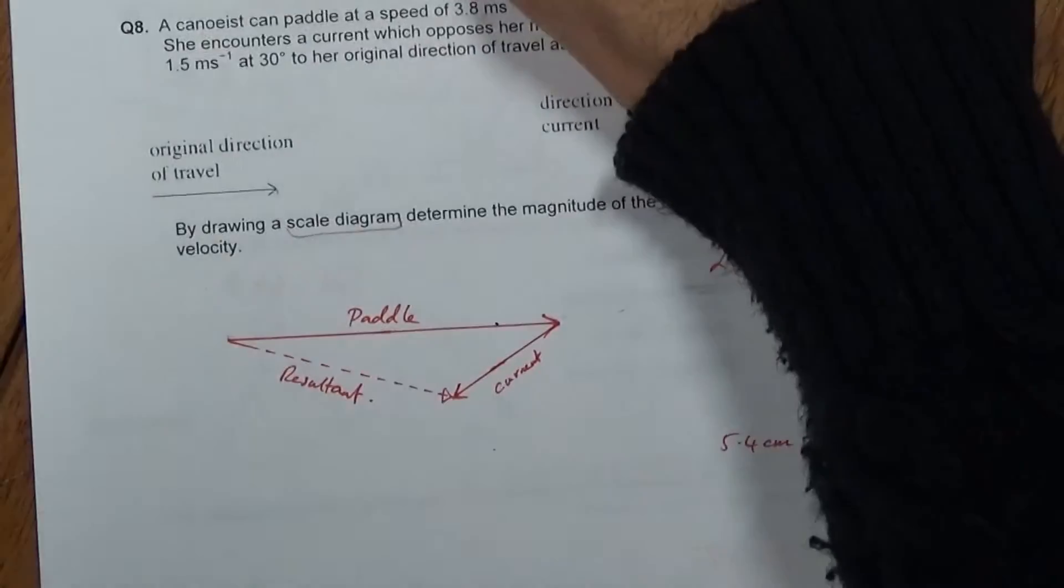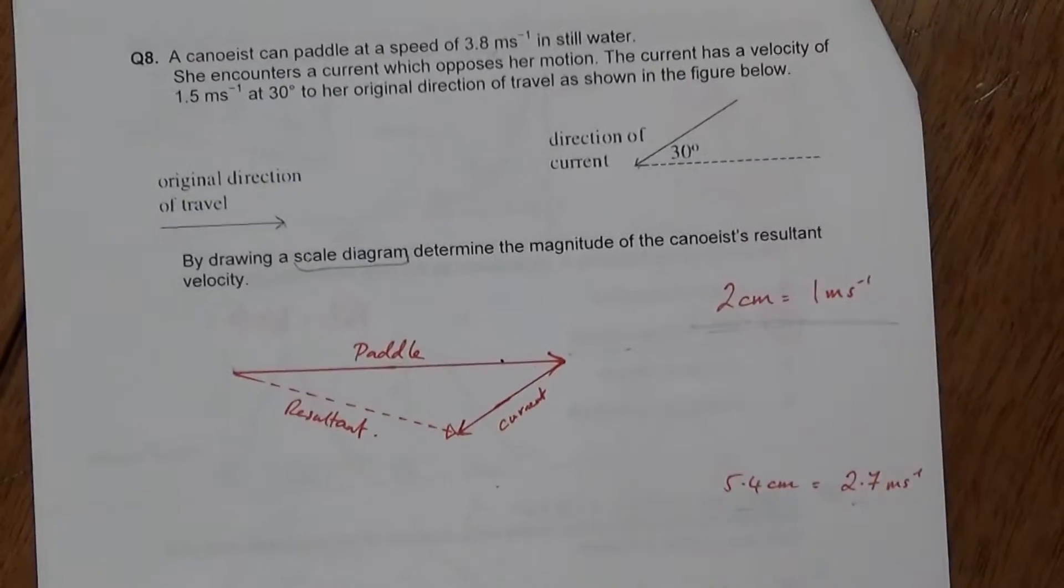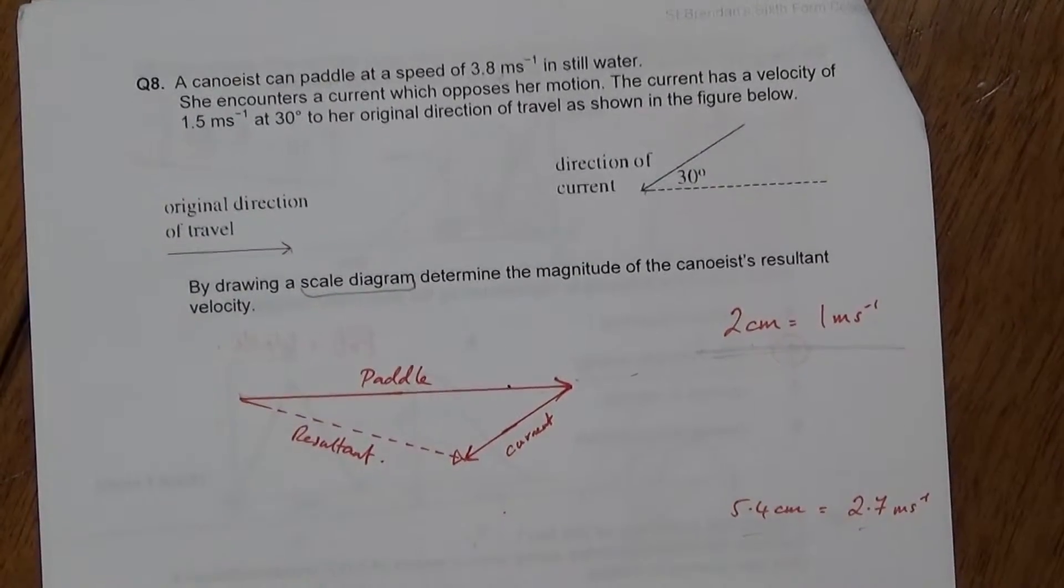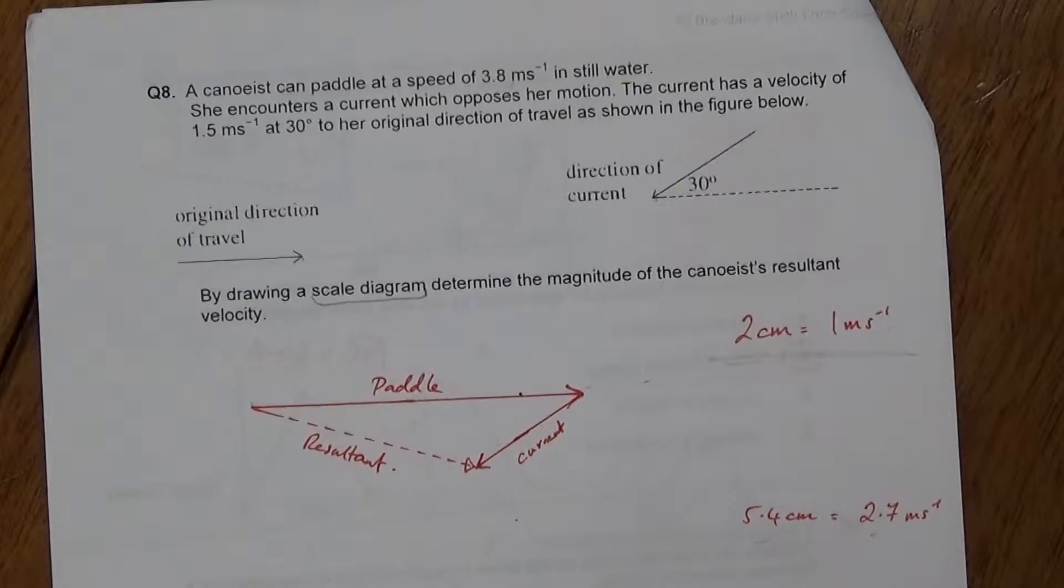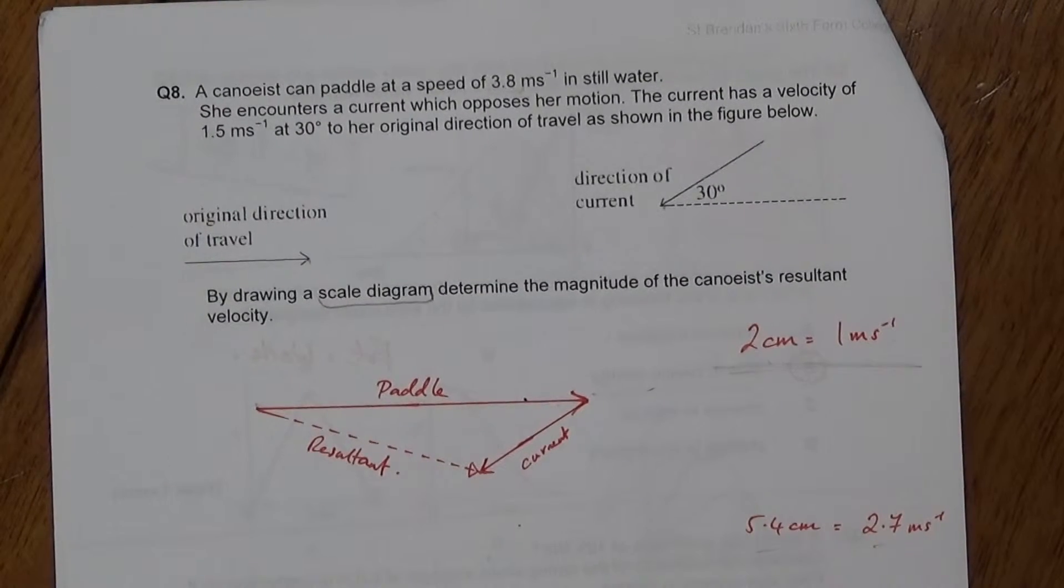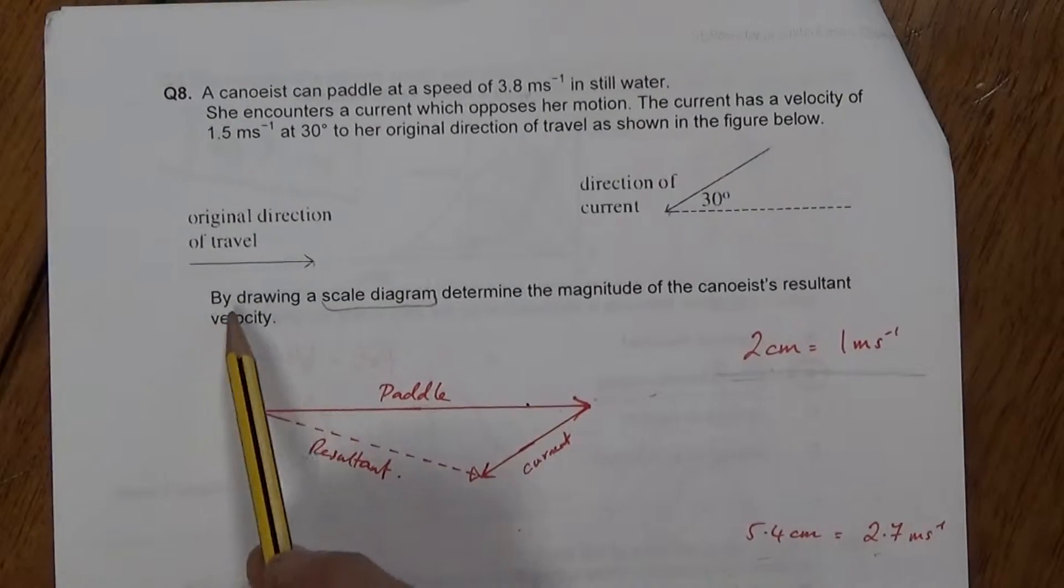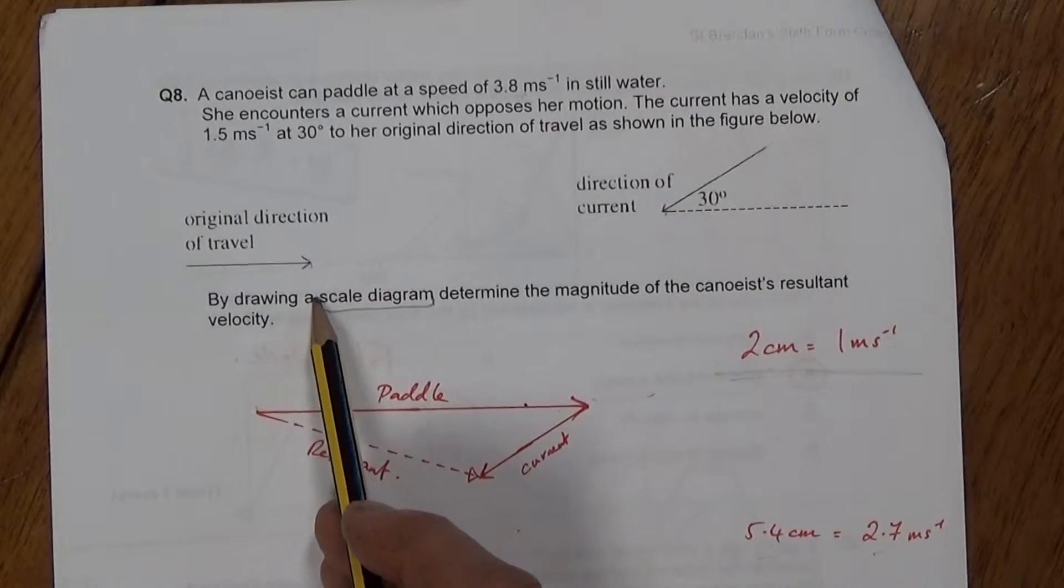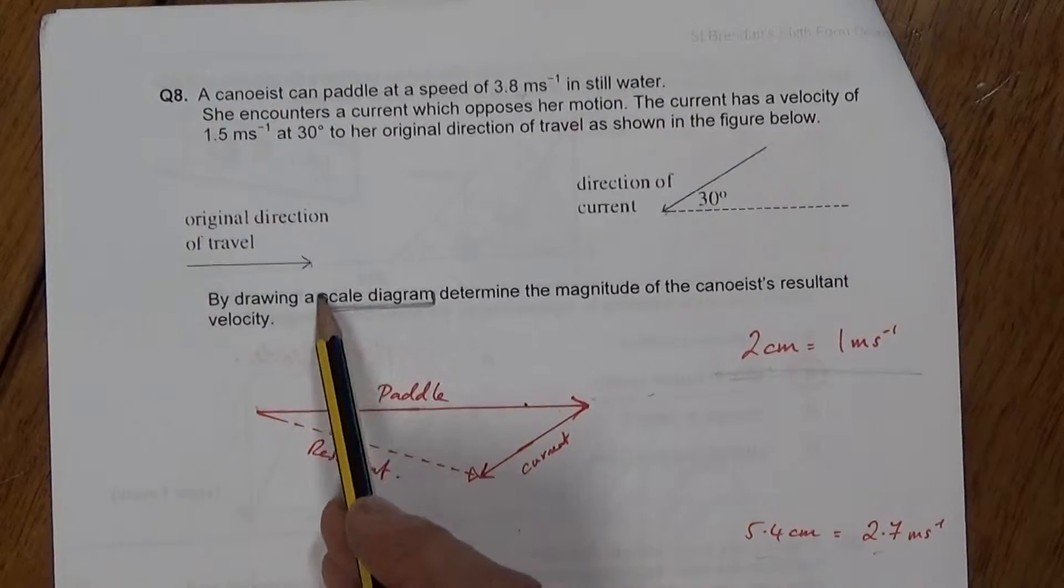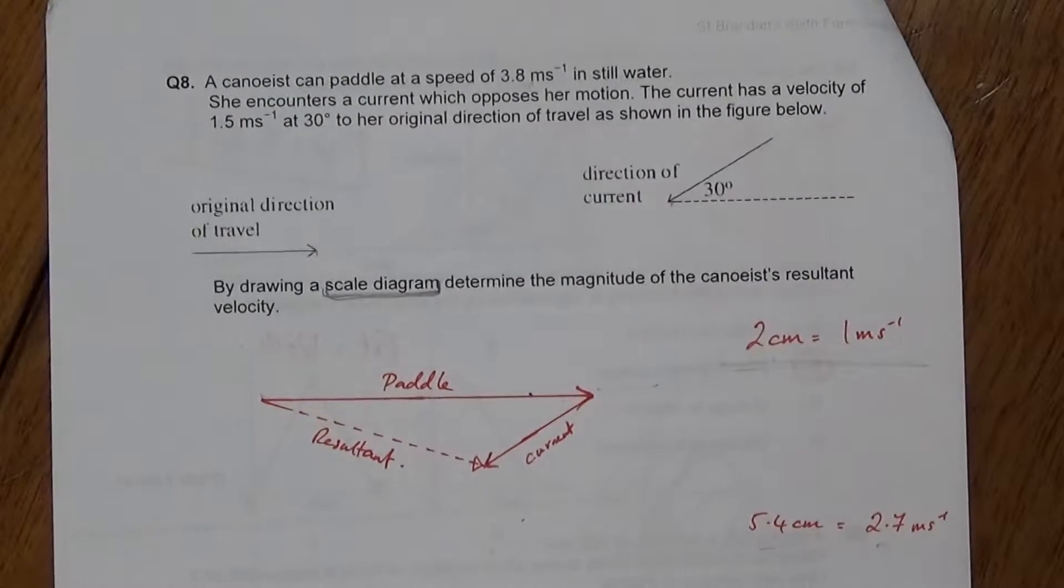Okie dokie. Absolutely tragic for a lot of people, this question. Let's talk through how this one comes about. Question 8. So the key word here is we want a scale diagram. Remember these scale diagram things are GCSE. This is GCSE physics, this question.